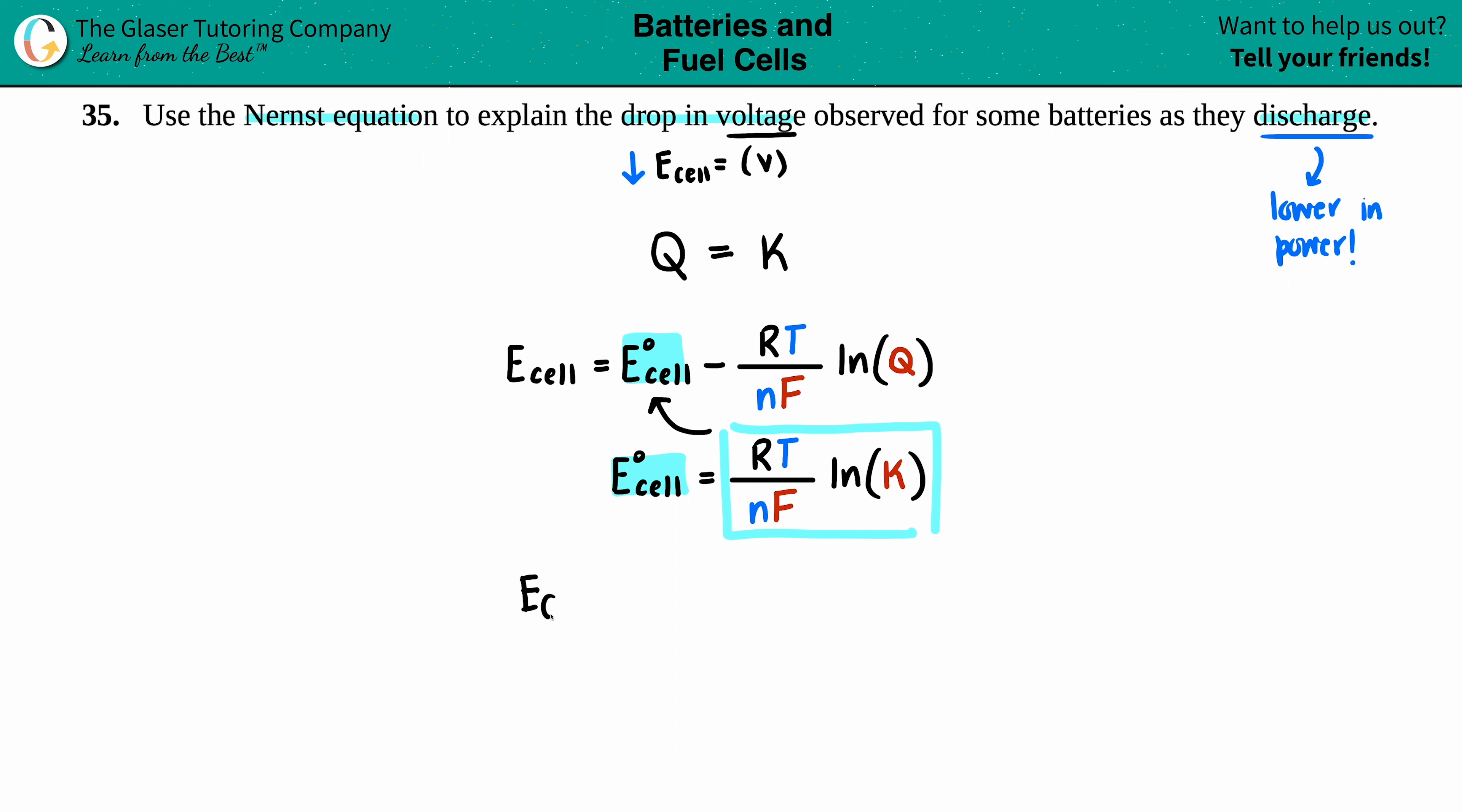So E_cell equals - what does the standard cell potential equal? It's RT over nF times ln(K), that's the E_cell standard. Then I'm just going to keep subtracting minus RT over nF ln(Q). If I highlight this, that's what this is, and that's what this is.